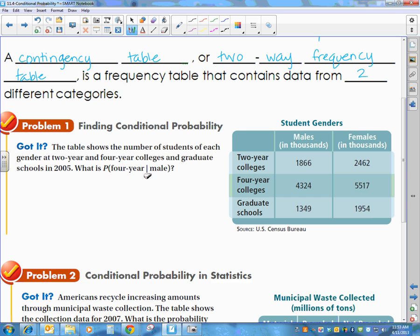And this line here, we haven't talked about that before, means given that. So this is the mathematical way of writing, what is the probability that I pick a four-year student given that that student is a male. So the total population I'm choosing from are my males.